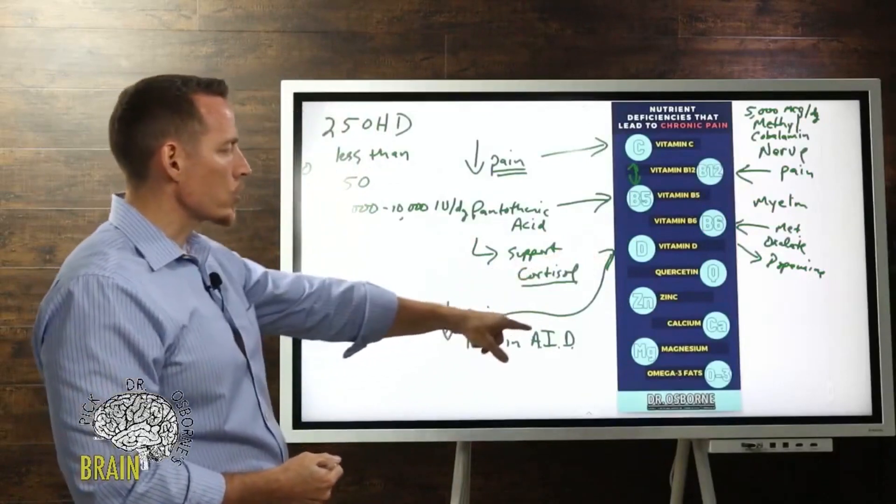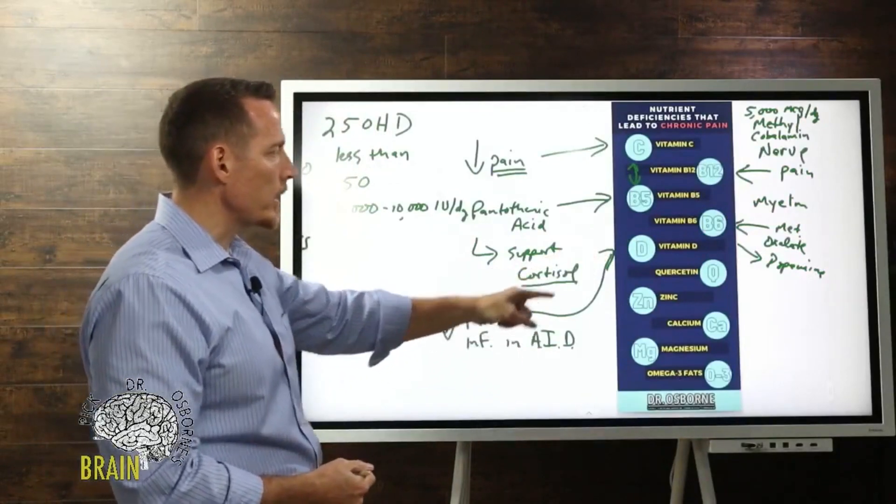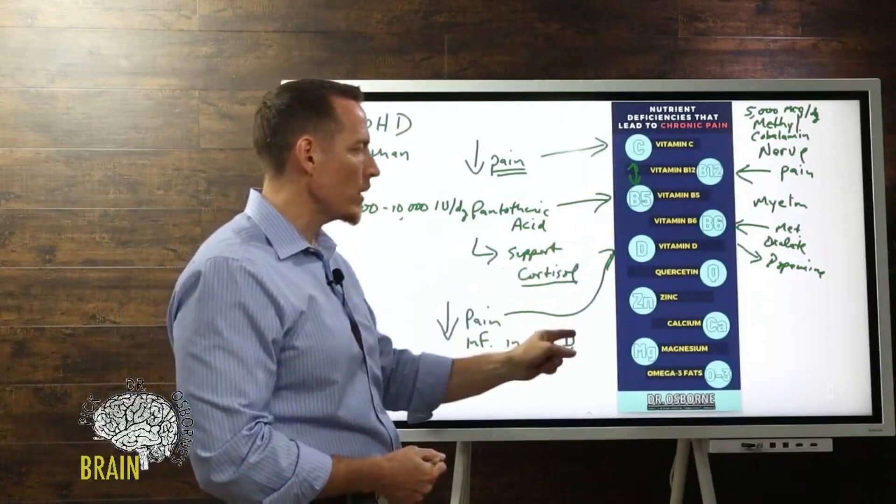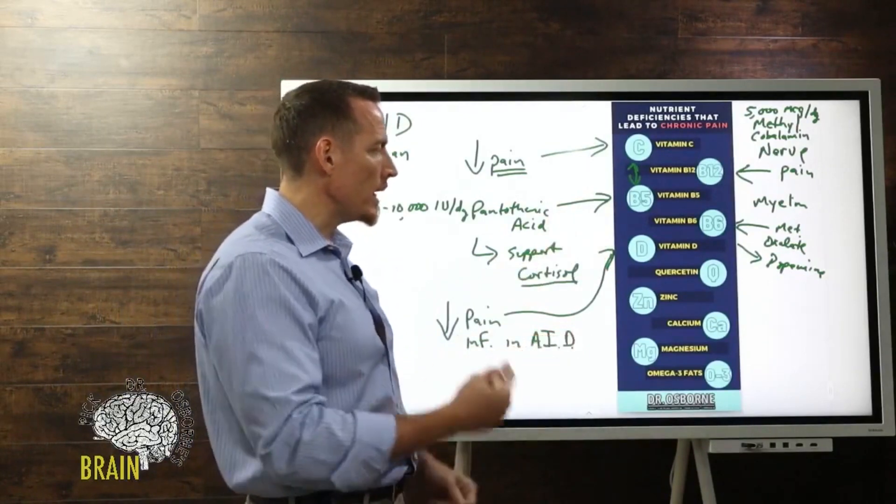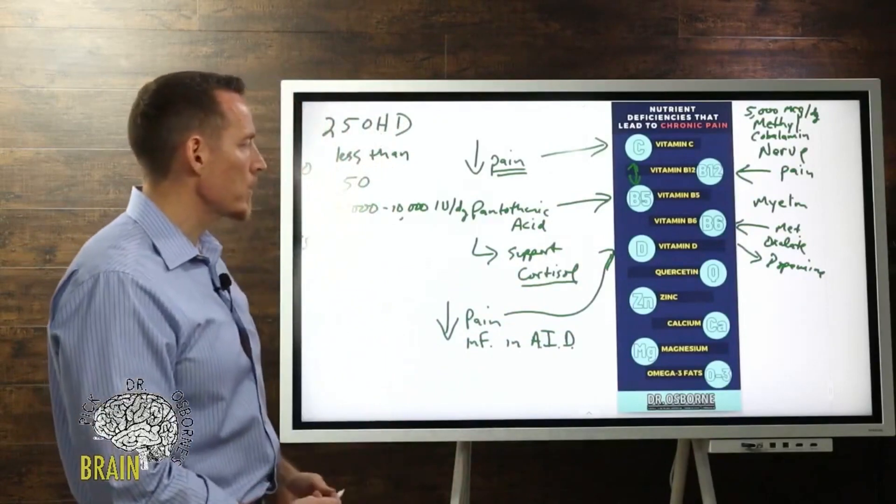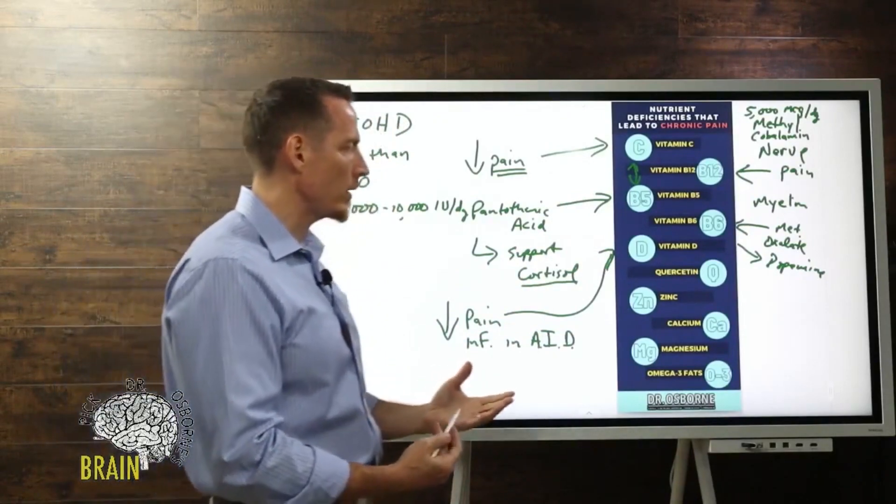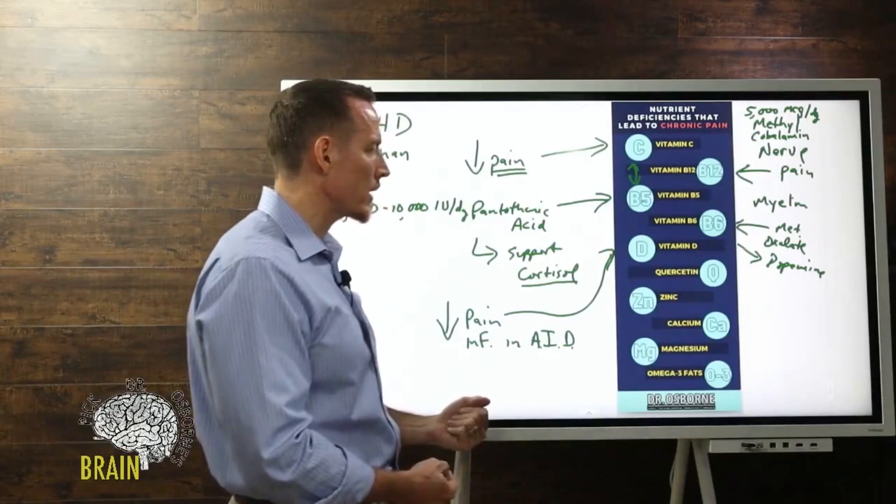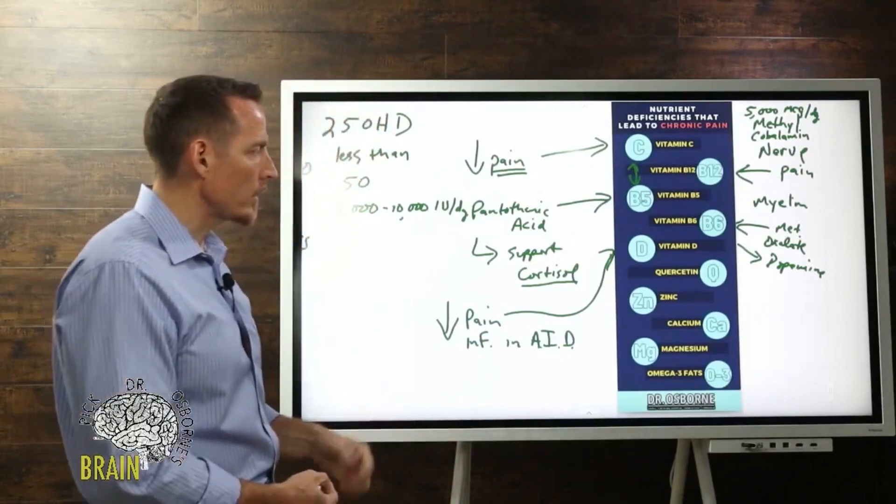The best way to not need vitamin D is to get your autoimmune inflammation under control by changing your diet. Then you don't need as much vitamin D because when you don't have autoimmunity, your body doesn't burn through all that vitamin D as much. Natural sunlight and foods like mushroom and liver can provide that for you.